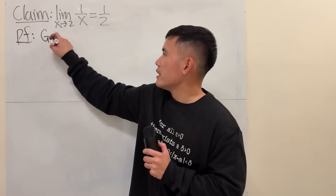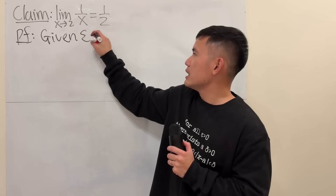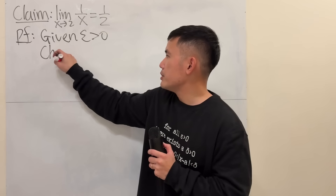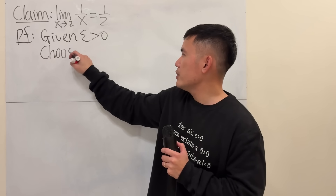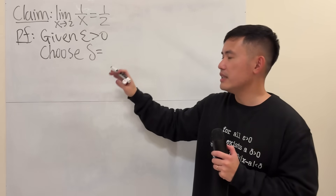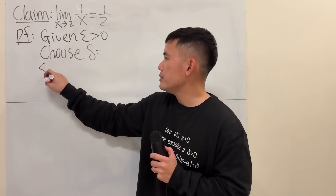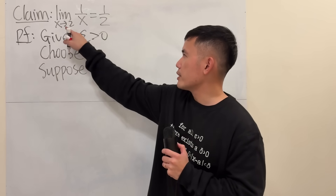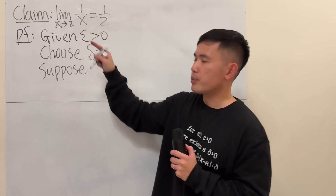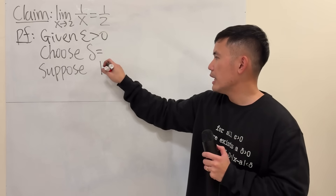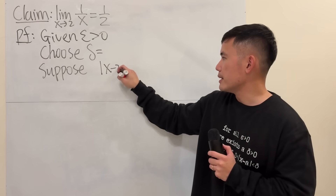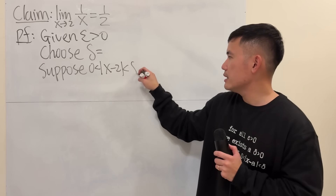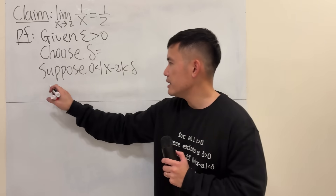To begin the proof: Step one, give an epsilon greater than zero. Step two, choose delta — we don't know what it is yet, so leave it. Step three, suppose — since we are talking about x approaching two — that the absolute value of x minus two is between zero and delta.